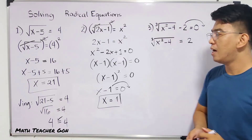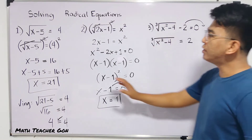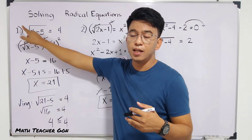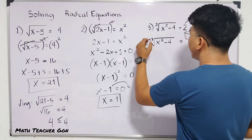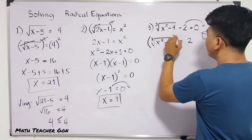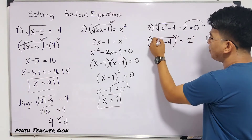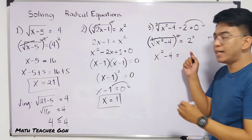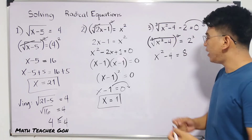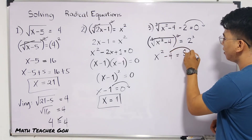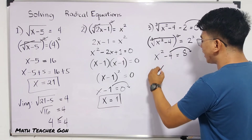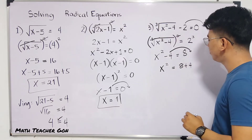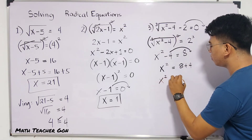The next step is to eliminate the radical sign. Earlier, we raised both sides by 2 because the index was 2 — there's an invisible 2. Since here the index is 3, what we need to do is raise both sides of the equation by 3. This eliminates the cube root, giving us x squared minus 4. On the right side, 2 cubed is equal to 8. To solve for x, we transpose negative 4 to the other side — from negative it becomes positive — giving us x squared is equal to 8 plus 4, which is x squared equals 12.